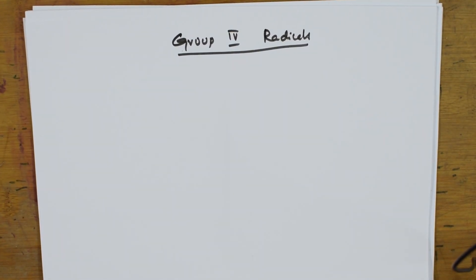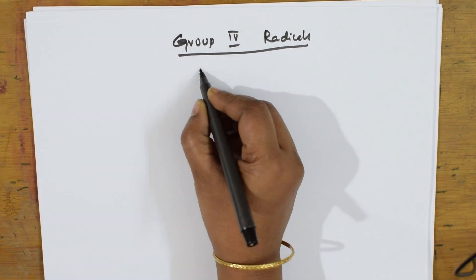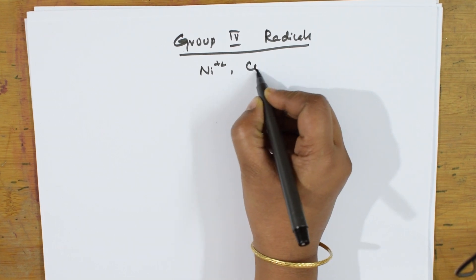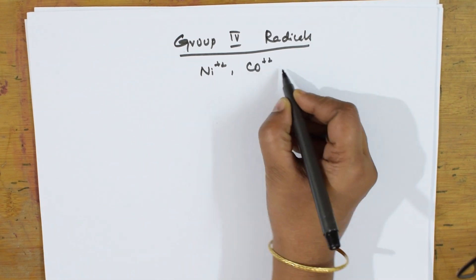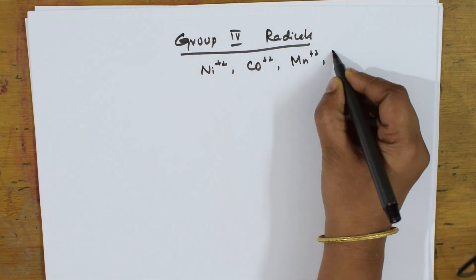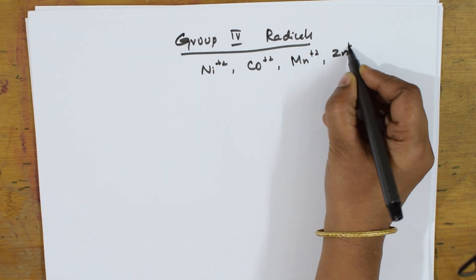Welcome back students. Let us come back and analyze Group 4 radicals. When we speak about Group 4 radicals, the radicals present are nickel, cobalt, Mn²⁺, and Zn²⁺.